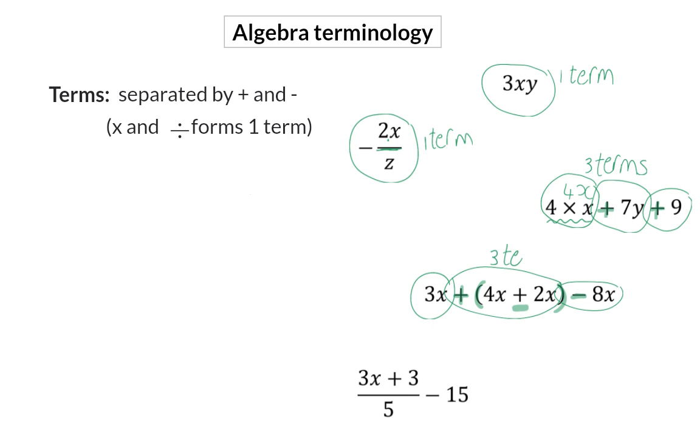In our last example, we have addition in the numerator, but we also have a big division line. And that line implies that everything at the top is actually in a bracket. So, that makes it one term. After that, we have minus 15, and the minus separates the second term. So, here we have one term and a second term.